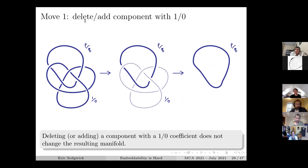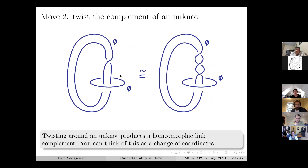The Kirby calculus move I want here is: you can always delete or add a component labeled 1/0 from a surgery diagram. A component with a 1/0 label basically says just glue this in the obvious way - it's not doing something very interesting. Also, link complements: knots are determined by their complements but links are not, so these two link complements are homeomorphic - you cut along this pair of pants bounded by this unknot, twist your manifold, and glue it back.